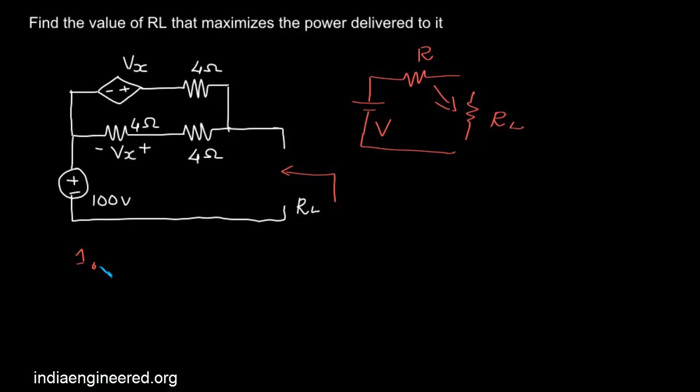Now, we can do it by two ways which are conventional methods. One, we can put a test source which can be a voltage source or a current source. If we put a voltage source, we have to find out the current through it.